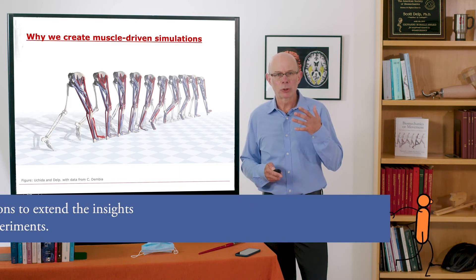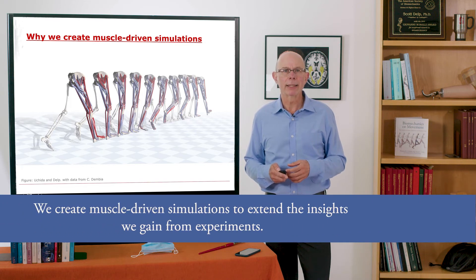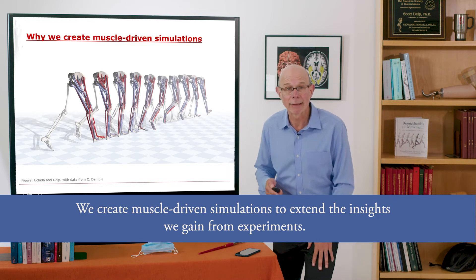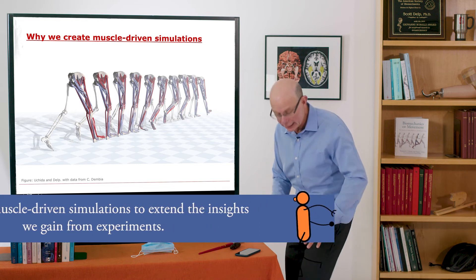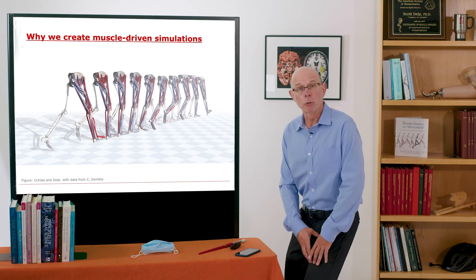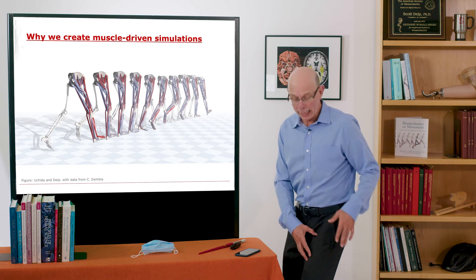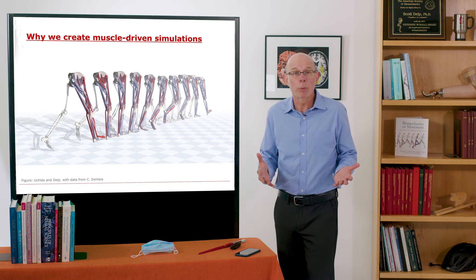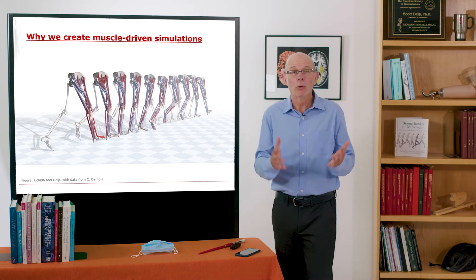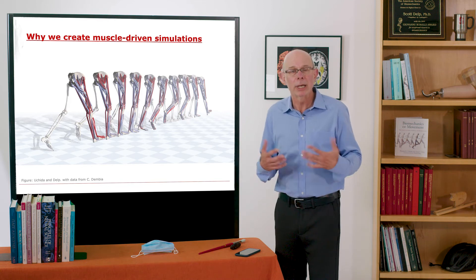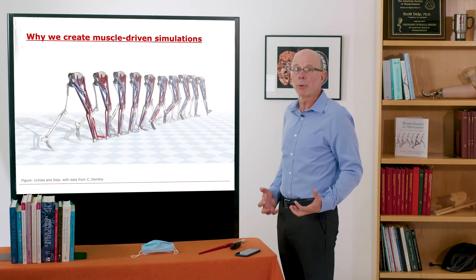An important use of muscle-driven simulations is to extend the insights we gain from experiments. For example, it's possible to measure muscle activity, but I can see the activity in a muscle but I don't know how much force that muscle is generating and how that's producing ground reaction force. And that's, for example, why we couldn't figure out why the girl or the boy in that video had crouch gait. We don't know what's actually limiting their capacity to stand upright and to support their body weight.